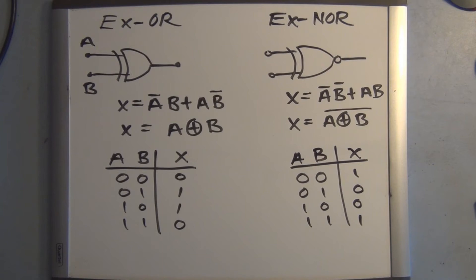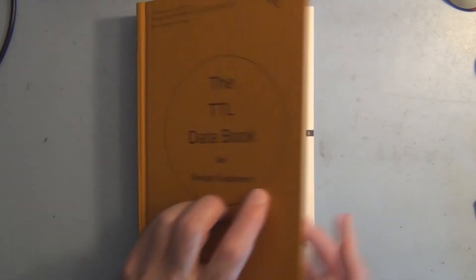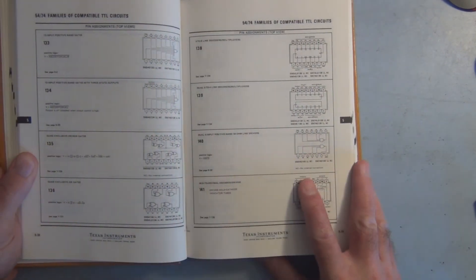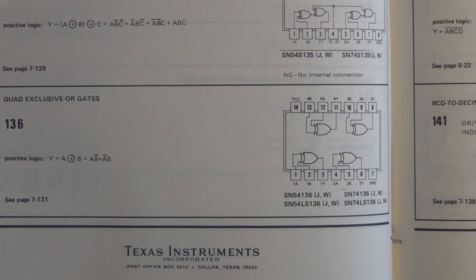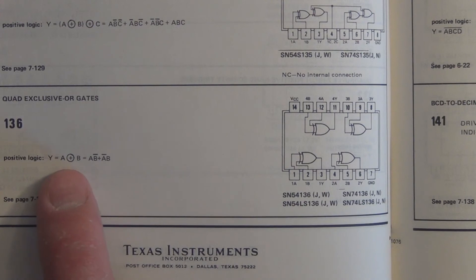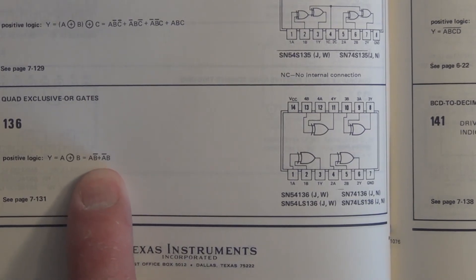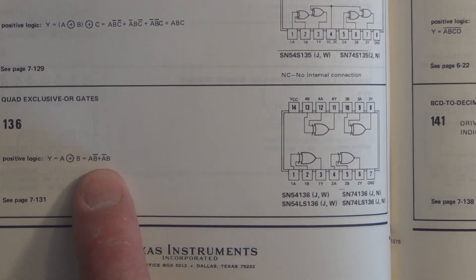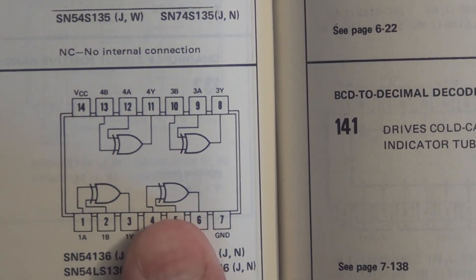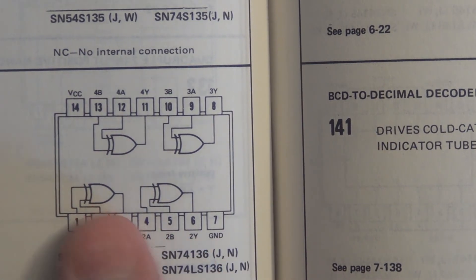Let's take a quick look at these two logic gates in the Texas Instruments TTL data book. The exclusive OR is a 74136, which is defined as a quad exclusive OR gate. Here we have the shorthand symbol for the exclusive OR operation along with the Boolean expression represented by two AND gates OR'd together — A-B-not OR A-not-B. The logic symbols are shown in a 14-pin DIP package, with four exclusive OR gates in this IC.